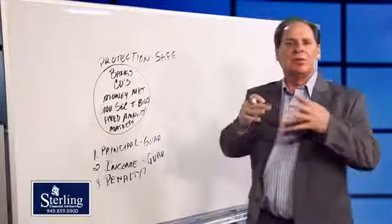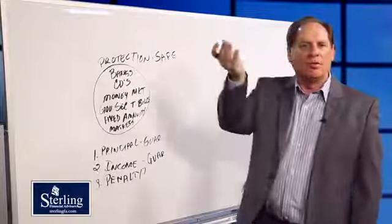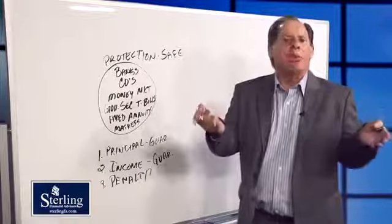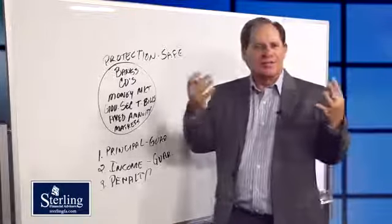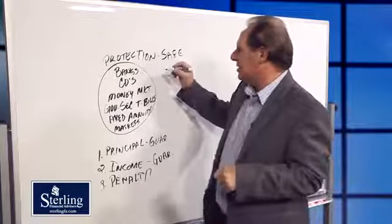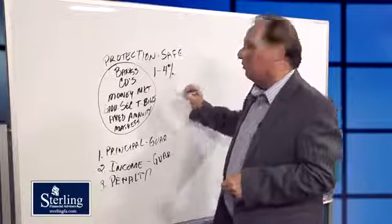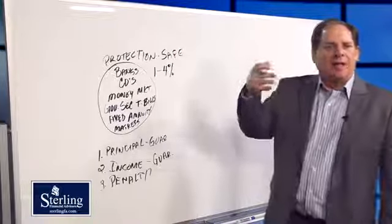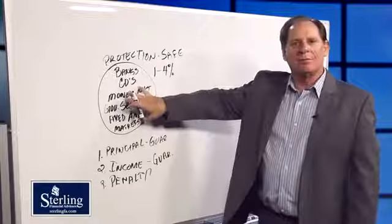Because we want our money safe and guaranteed, we are going to give up opportunities to earn more growth or income. Interest rates are down quite a bit, but at some point they're going to start rising. I would tell you that in this world over the next five years you're going to earn somewhere between one to four percent. When we want our money safe, we have to accept a lower return — that's just the nature of the market.